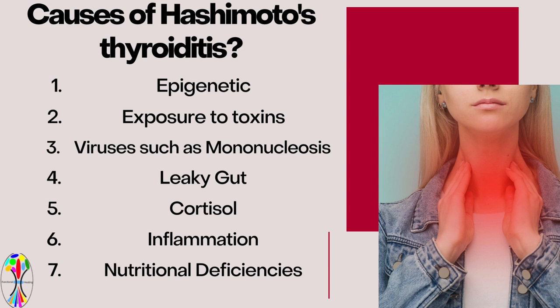A very important connection is that of leaky gut and Hashimoto's thyroid disease. The presence of leaky gut is the first step to developing a lot of different autoimmune diseases. Leaky gut simply means that the intestinal lining of the individual is actually leaking — meaning it has holes in it — which means it is not capable of doing the digestion and absorption of nutrients it is supposed to do. It also means that a lot of bacteria, fungus, and toxins are potentially entering the system without being stopped, which leads to the production of antibodies and inflammation, and can lead to Hashimoto's thyroid disease.